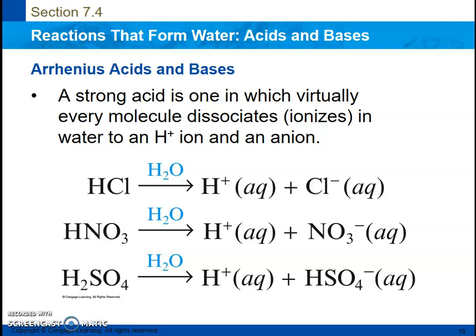Arrhenius acids and bases — that is one categorization of acids and bases. There's also a different categorization called Bronsted-Lowry, which we will discuss next year. A strong acid is one in which virtually every single molecule dissociates or separates into its individual ions when dissolved in water. It breaks down into a hydrogen ion and whatever anion that hydrogen is attached to. So hydrochloric acid becomes hydrogen ions plus chloride ions — the hydrogen breaks off and completely separates from the rest of the substance.